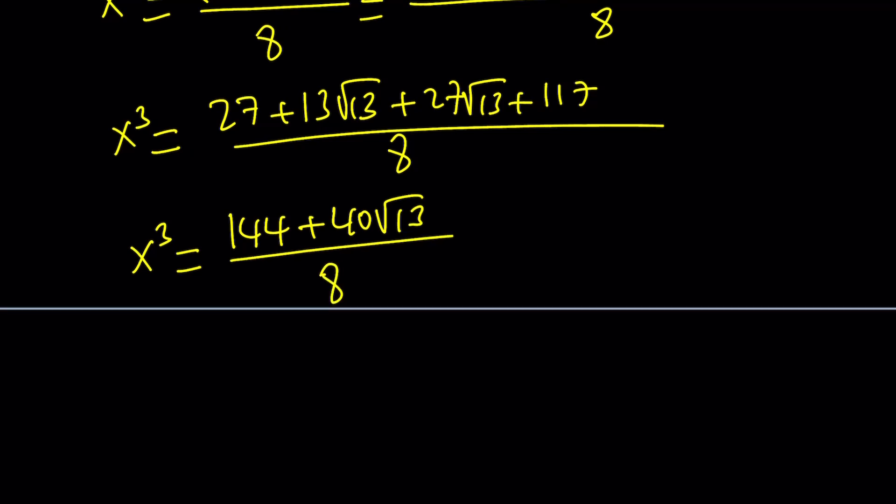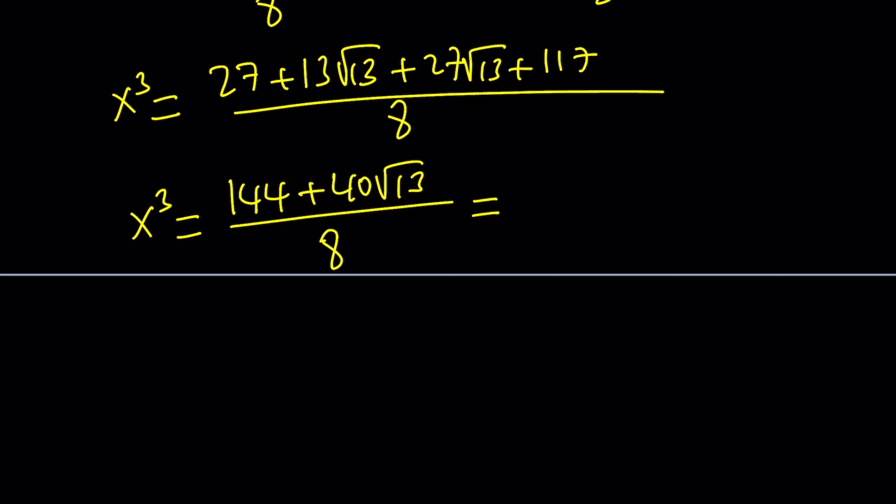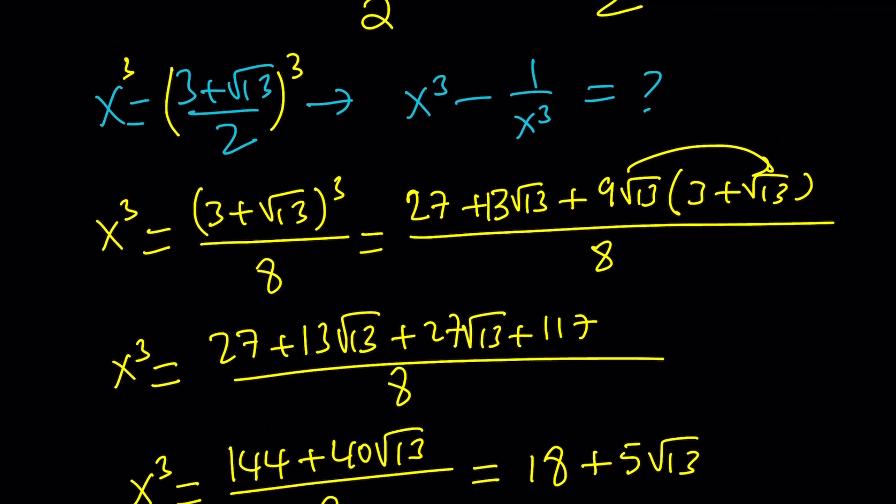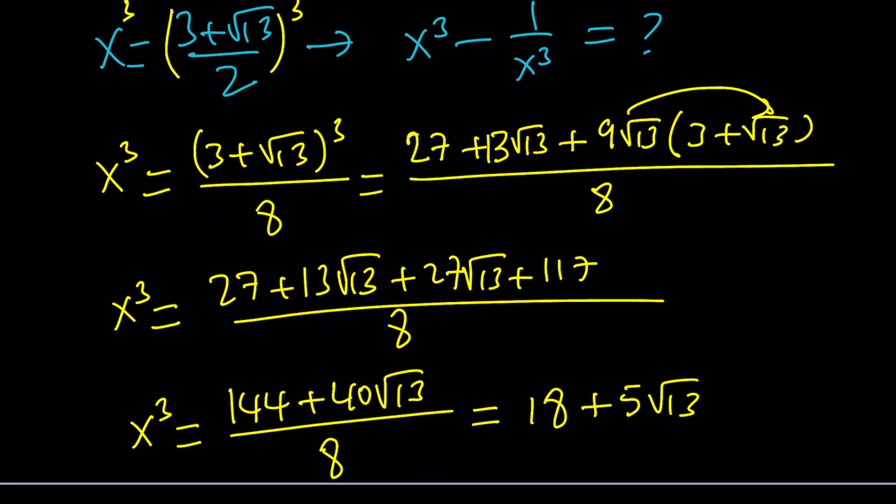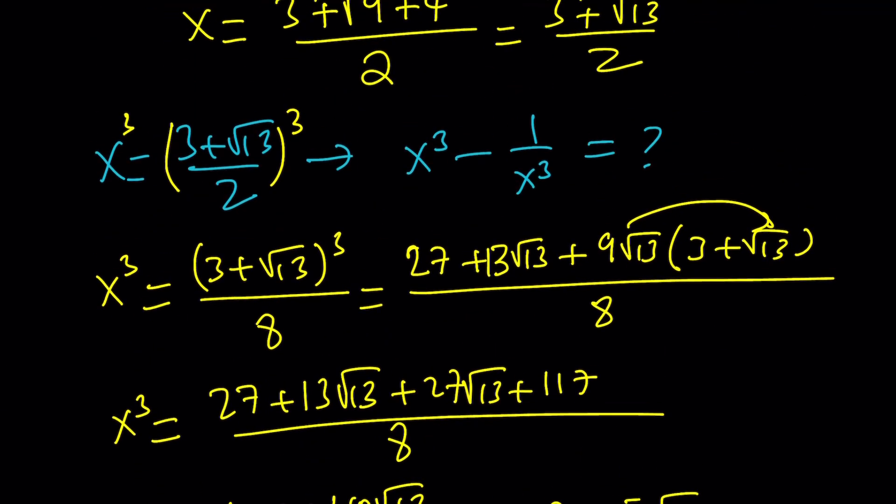27 plus 117 is 144. And 13 plus 27 is 40, 40 root 13. All of that is divided by 8. Both of these numbers are divisible by 8, so we can simplify x cubed a great deal. 144 divided by 8 is 18. And then this is going to be 5 root 13. So we got a really nice expression for x cubed, and notice that x is kind of like a fraction, but x cubed isn't.